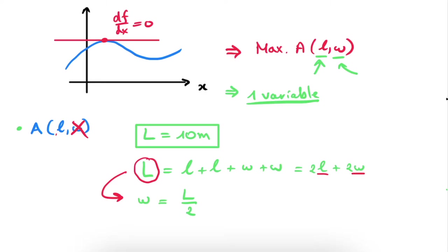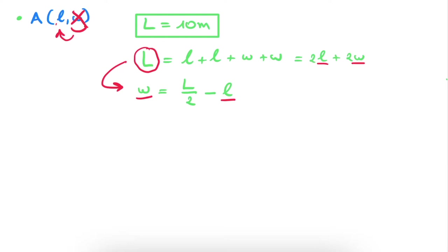So we can rewrite this equation as: W equals capital L divided by two minus small l. In this way, we've written W — the width of the rectangle — as a function of the length. Capital L here is the circumference, which is just a constant. So we've written one variable as a function of the other, and we can use this to rewrite the equation for the surface of our rectangle — the function we want to derive to find the maximum.